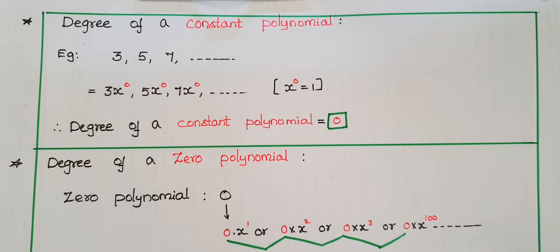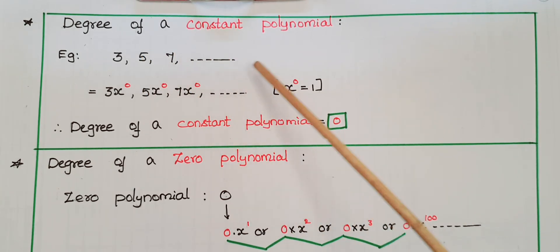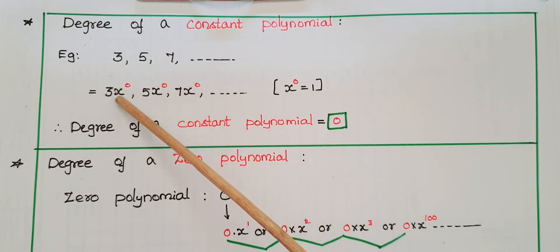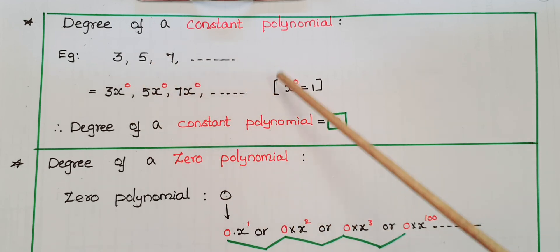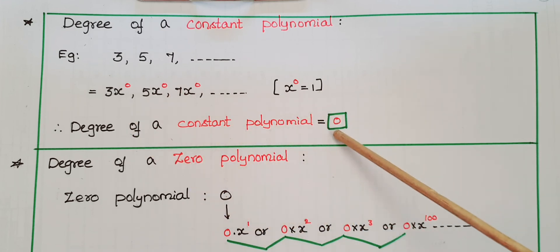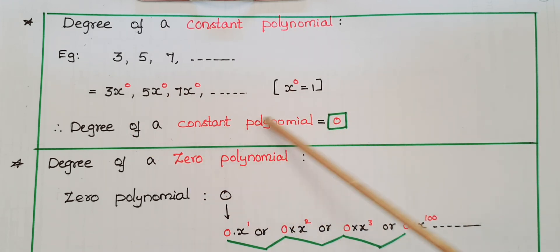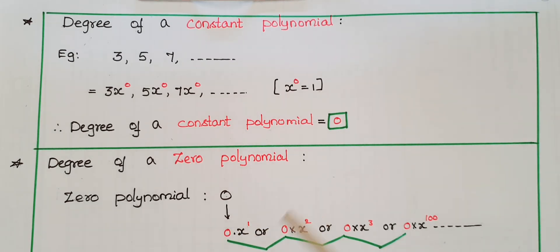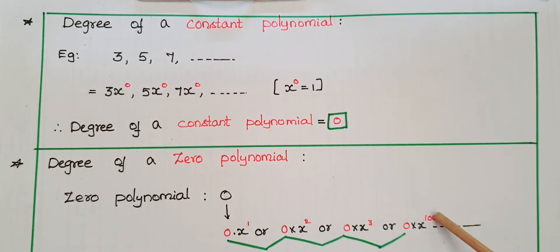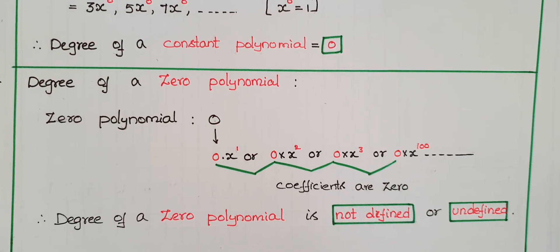Now, the degrees of constant polynomials and the zero polynomial. Constants like 3, 5, 7 can be written as 3 times x to the power of 0, 5 times x to the power of 0, 7 times x to the power of 0, because x to the power of 0 equals 1. So the degree of a constant polynomial is always 0. The zero polynomial is simply 0, which can be written as 0 times x, or 0 times x square, or 0 times x to the power of 100 — any power. Since the coefficients of all these are 0, the degree of the zero polynomial is not defined, or undefined.